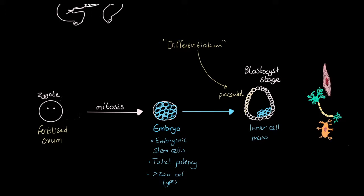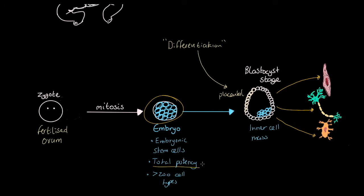Some of these inner cells are going to eventually specialize in contractility as muscle cells. Others are going to specialize in communication and messaging through the movement of electrical signals as nerve cells. Others are going to form bone cells. So from this group of cells which had total potency to be any kind of human cell, those cells have differentiated and specialized into the roles they are going to perform within the body.